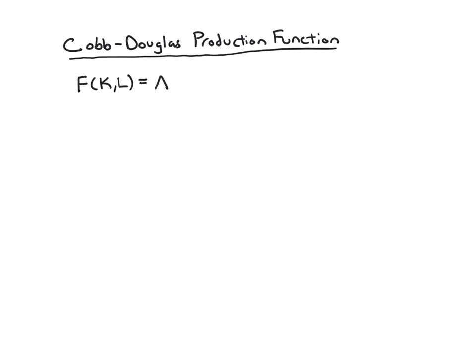The formula is A times K (capital) to the exponent alpha, times L to the exponent 1 minus alpha. K and L are variables — capital and labor as we're familiar with. A is a parameter that represents or controls productivity. The higher A is, the bigger the total output will be, as we can see from the formula.